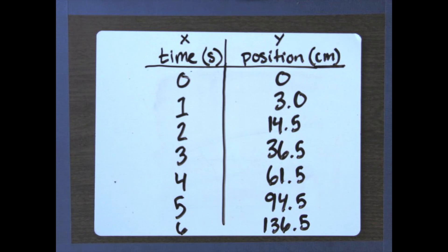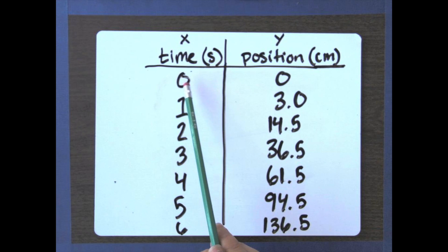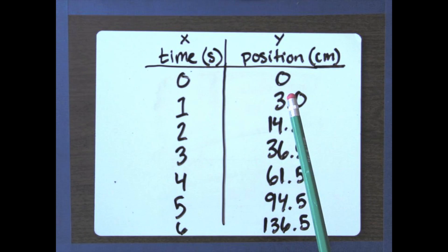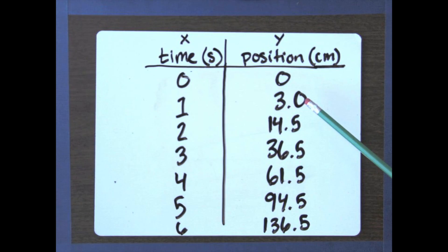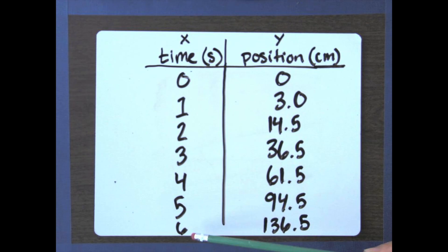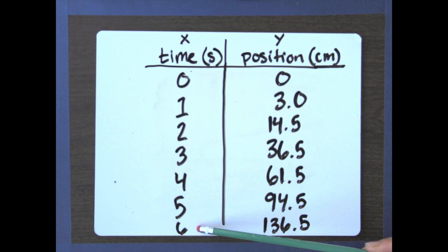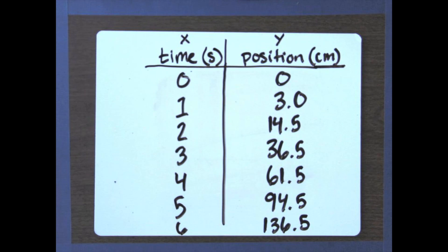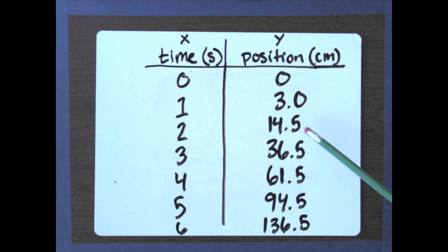Now we've got this data table all filled in. We noticed that it started at zero centimeters and we calculated every position all the way down. We actually added a sixth second — at six seconds we were all the way down at 136.5 centimeters. I know it was a little difficult to read since it was blurry on the video, but these are accurate positions. Make sure you got this data table written down.